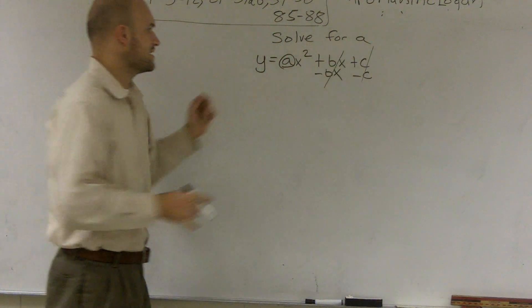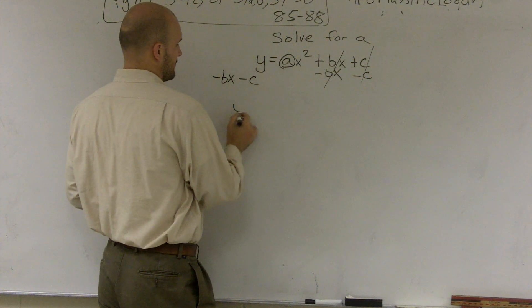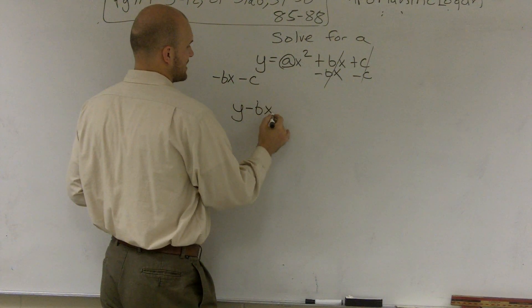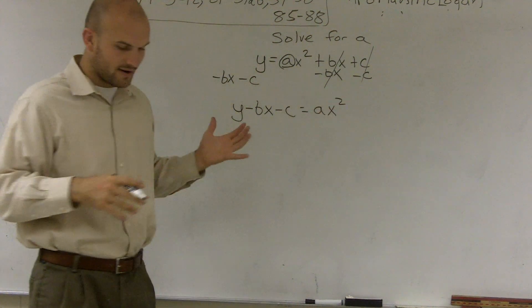Now remember, whatever you do on the right side, you have to do on the left side. Therefore, I have y minus bx minus c is going to equal a times x squared.